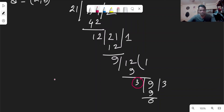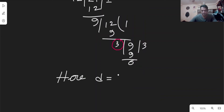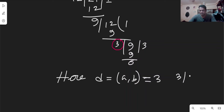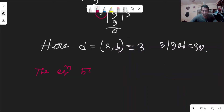So GCD(A, B) = 3. Now we check: does 3 divide 906? 906 divided by 3 is 302. Since d divides C, the equation 54x + 21y = 906 has a solution.